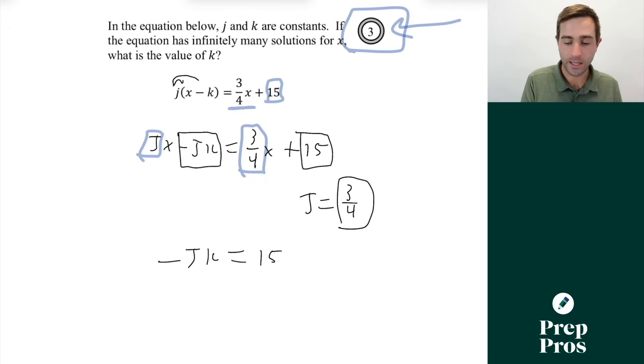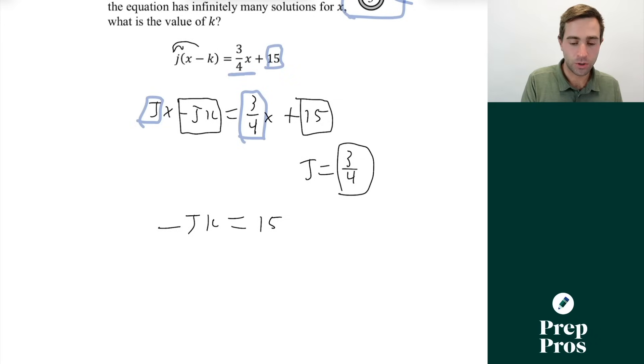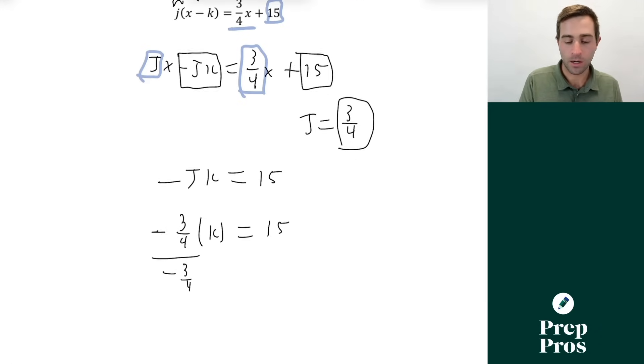Therefore we can now say negative jk must equal 15. We know that j is three quarters so what we now know is negative three quarters times k is equal to 15. So we can divide out that negative three quarters on both sides that's going to give us that k is equal to negative 20 and that will give us our correct answer here.